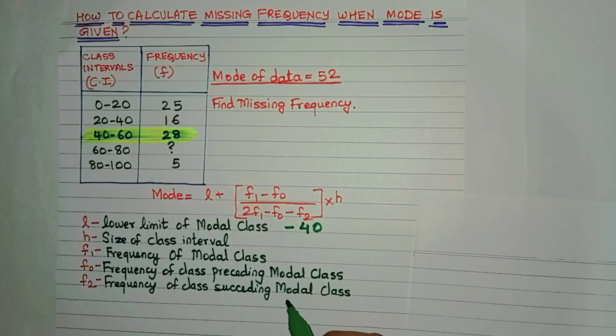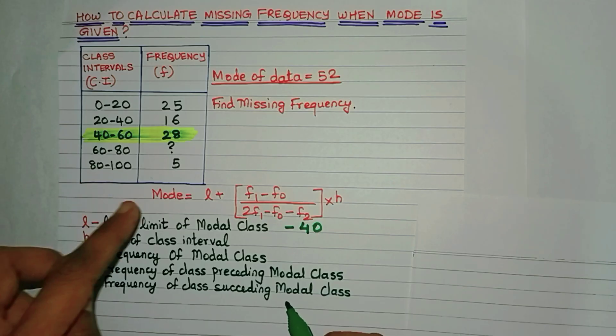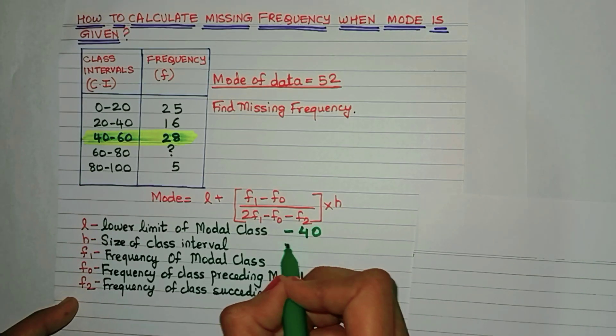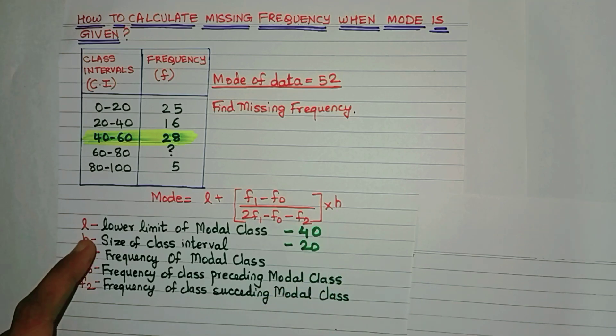Now H is the size of the class interval. Any class interval you take, just subtract the upper limit and lower limit. So for example, 80 to 100, I just do 100 minus 80, which is 20. So 20 is the H or the size.